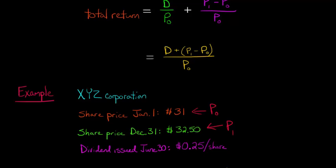So we say that that is P-sub-1. Now we're going to assume that the firm didn't have any stock splits or anything during the year. That would complicate things. So we went from $31 a share, and then we went up to $32.50 a share. So we had an increase in the share price. So that's going to affect our return. Then also, during that year on June 30th, the firm issued a dividend of $0.25 a share. So that $0.25 is going to be our D, our dividend.